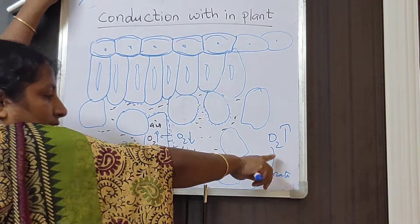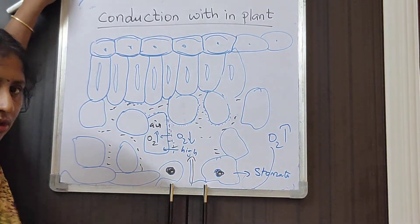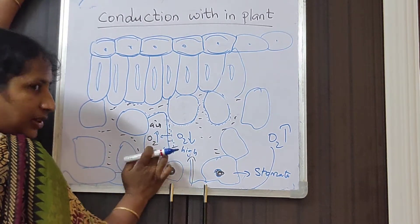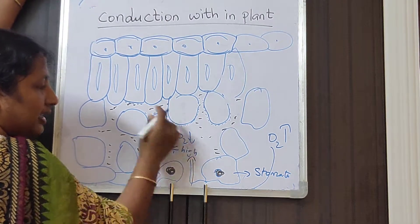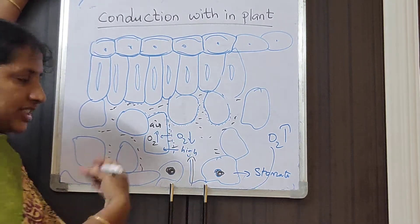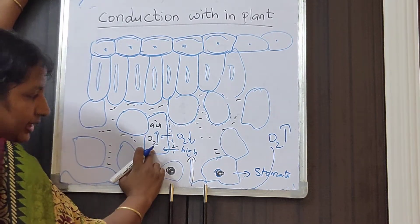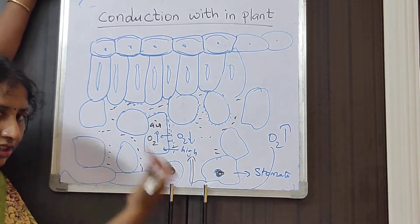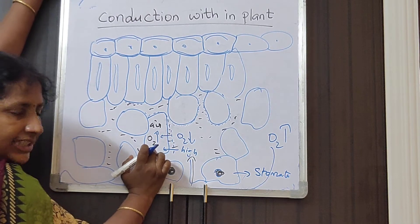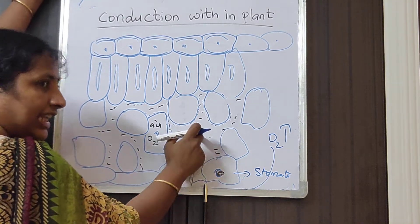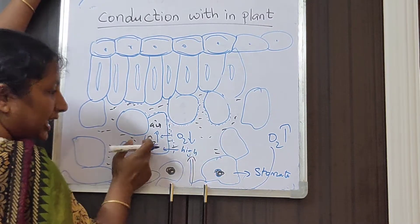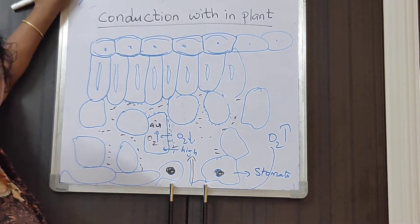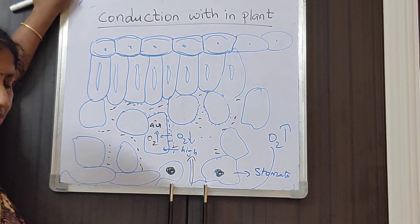Oxygen is continuously used by the cell for respiration, so the oxygen level inside the cell keeps decreasing. Oxygen remains high in the atmosphere and low inside the cell. So by diffusion — high to low — oxygen continuously enters from outside to inside the cell.